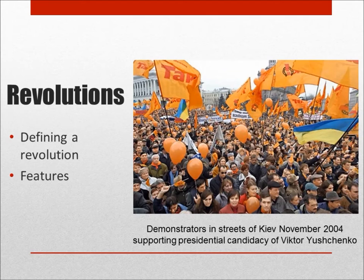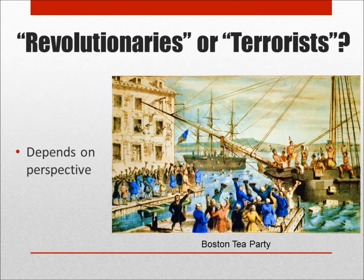Revolutions differ from social movements in the wider range of methods used to bring about change as well. In particular, most revolutions employ violence, or at least the threat of violence, as one means of achieving change, while violence is rarely a preferred tactic in social movements. The use of violence by revolutionary groups threatens the existing regime, and such groups are likely to be branded as terrorists in the modern sense of the term.